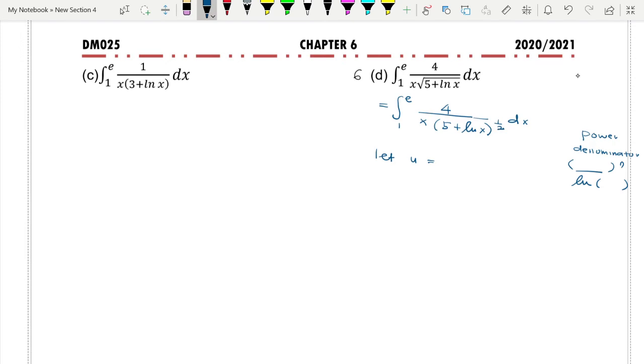If we use x here, we cannot use the log since we have 5 + ln here. We cannot use the power because we don't have the power here. So we will use the third choice, which is inside the bracket but without the power: u = 5 + ln x.